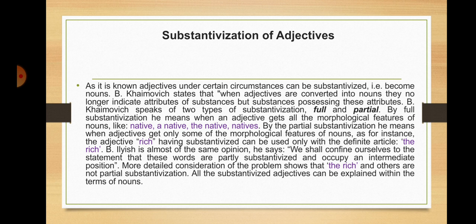By partial substantivization, Haimovic means when adjectives get only some of the morphological features of nouns — for instance, the adjective 'rich', which when substantivized can be used only with the definite article: 'the rich'. Elish is almost of the same opinion, stating that these words are partly substantivized and occupy an intermediate position. However, more detailed consideration of the problem shows that 'the rich' and others are not cases of partial substantivization — all substantivized adjectives can be explained within the terms of nouns.